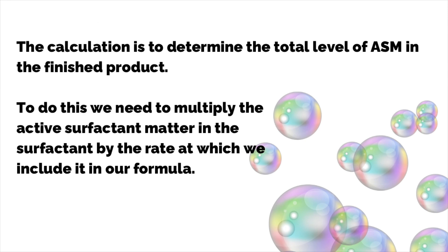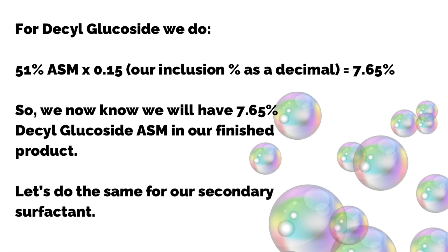The calculation is to determine the total level of ASM in the final product. To do this, we multiply the active surfactant matter in the surfactant by the rate at which we include it in our formula. For decyl glucoside: 51% ASM multiplied by 0.15 (our inclusion rate as a decimal) gives us 7.65%. So we know we will have 7.65% decyl glucoside active surfactant matter in our finished product.